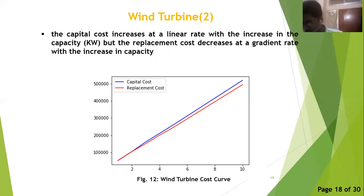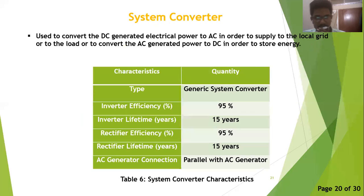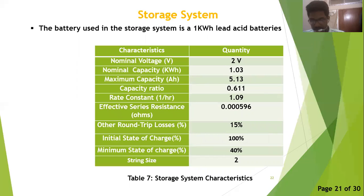The cost curve of the wind turbine is shown in figure 12. The biogas generator used in the system is a generic 500 kW biogas generator with a rated capacity of 500 kW, minimum load ratio of 50%, and a lower heating value of 5.5 MJ/kg. The converter in the system has an efficiency of 95% and is connected in parallel with the AC generator. The battery used in the storage system is a 1 kWh lead-acid battery with a nominal voltage of 2 V, nominal capacity of 1.03 kWh, maximum capacity of 513 mAh, minimum state of charge of 40%, and a string size of 2.